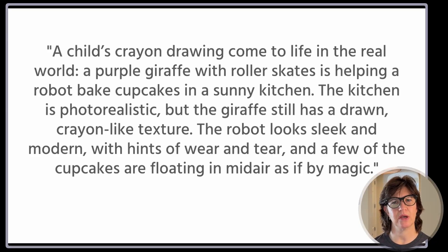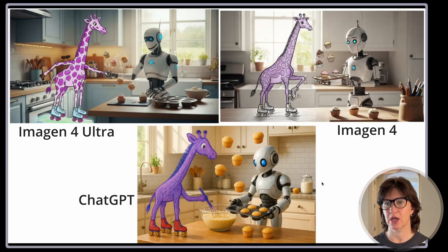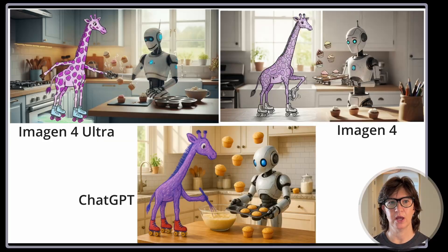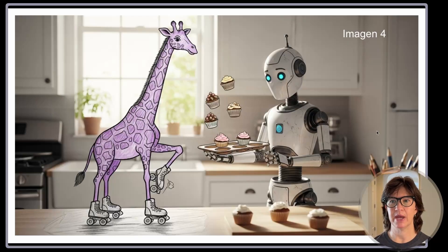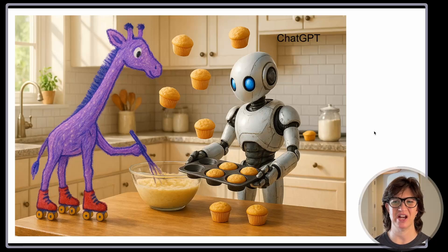I'll put the prompts down in the comments below. The first prompt is: a purple giraffe with roller skates helping a robot bake cupcakes in a sunny kitchen — the kitchen is photorealistic, but the giraffe still has a drawn crayon-like texture. Looking at these, you can already tell the difference between Imagine 4 Ultra and Imagine 4. The Ultra has more hyper-realistic detail in the background. ChatGPT has a slightly warmer, more fully integrated feel — the giraffe is actually mixing cupcake batter.